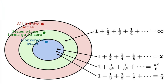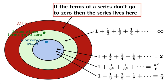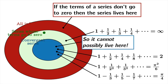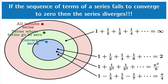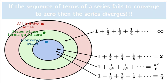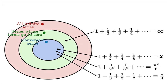If the terms of a series don't go to 0, then you're living in the outer ring — definitely not in the collection of convergent series. The snappy way to put this: if the sequence of terms of a series fails to converge to 0, then the series diverges. This is why it's called the divergence test. Sometimes you can immediately recognize that the terms don't go to 0, and therefore the series automatically diverges — there's no use trying to prove it converges because it can't possibly converge.